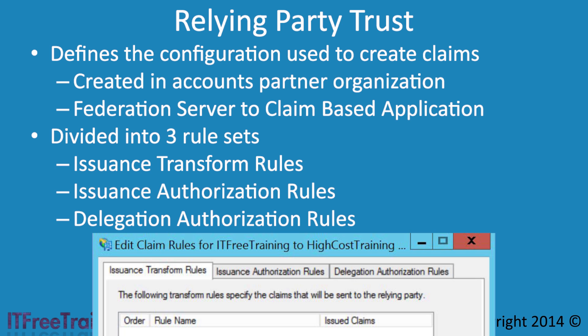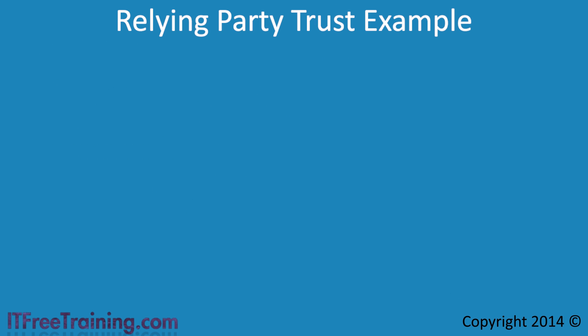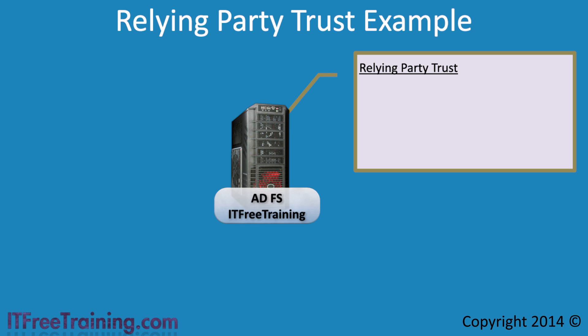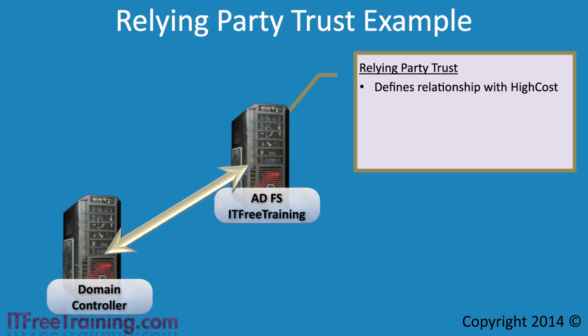To get a better idea of how these work, let's look at an example. First, consider the Active Directory Federation Server in the ITFreeTraining domain. This server needs to be configured to create claims to send to the HighCostTraining domain. So how would you do this? First, you would create a Relying Party Trust on the ITFreeTraining Federation Server. The Relying Party Trust defines the relationship with HighCostTraining — it contains information like what encryption is to be used and defines what functionality is available on the server. The next point to consider is who will be allowed to use this server to create claims. In a typical environment, you may have authorization determined by a domain controller, and in order for this to occur, you need a rule to define it.